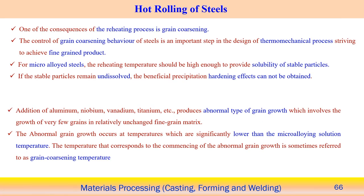The rolling operation is most important and is applicable even for hot rolling of steel. This is most widely applicable in the production of steels. Now we look into the metallurgical aspects associated with the hot rolling of the steel process — the consequences of the reheating process and the effect of metallurgy on the manufacturing process.